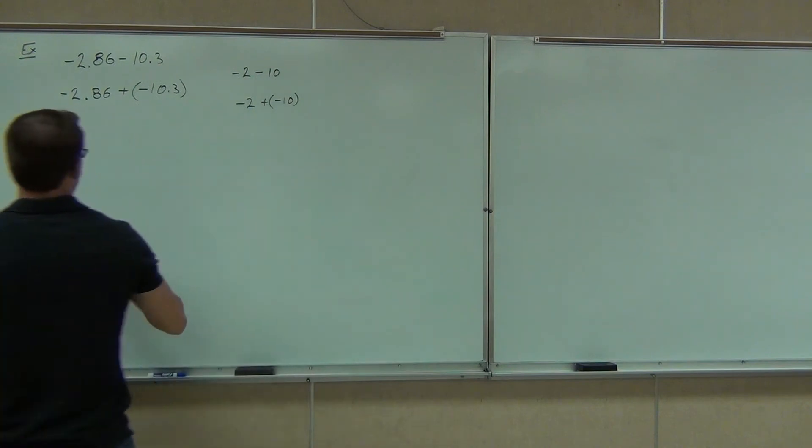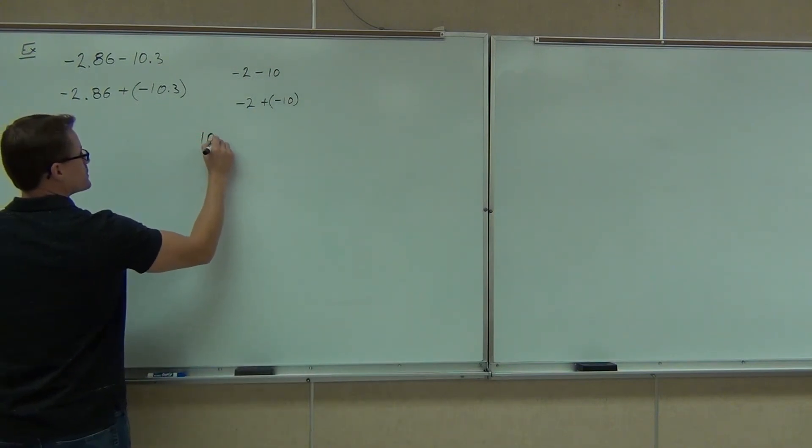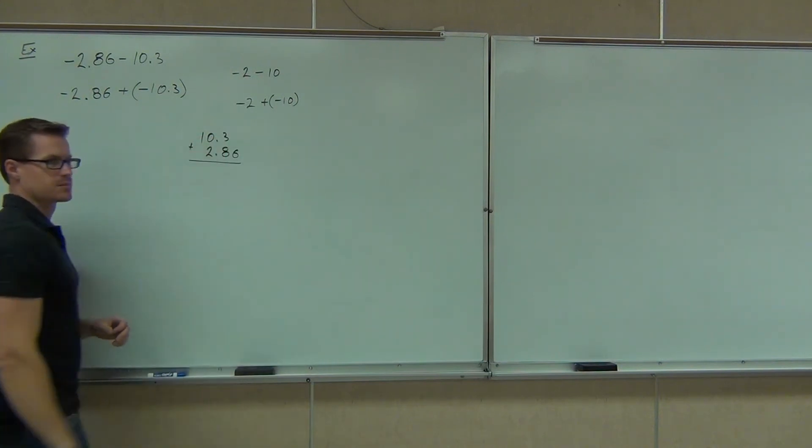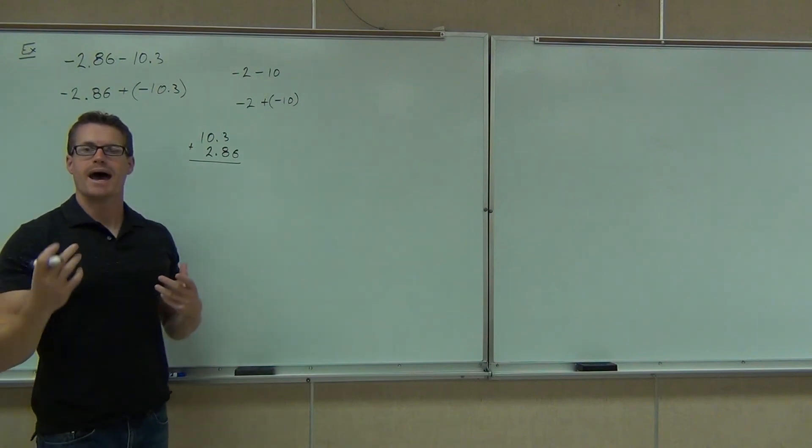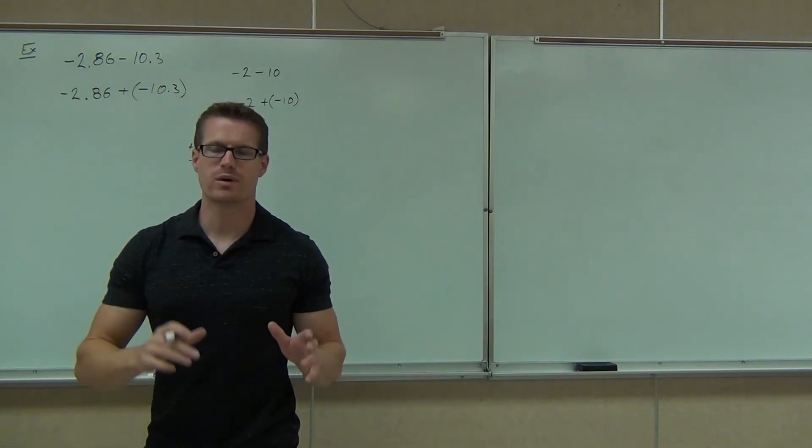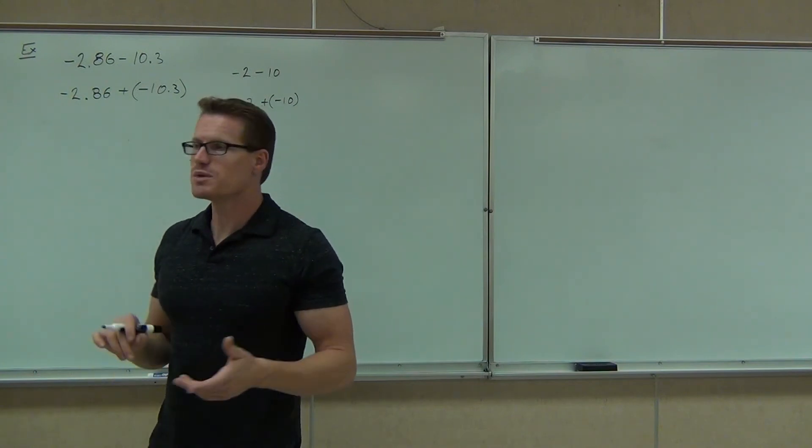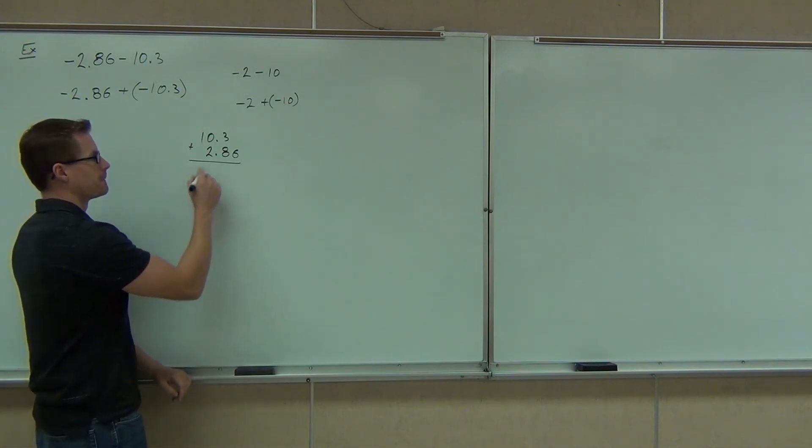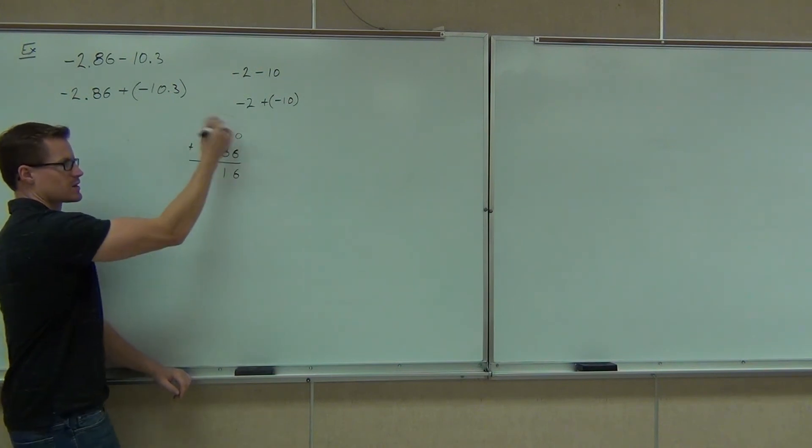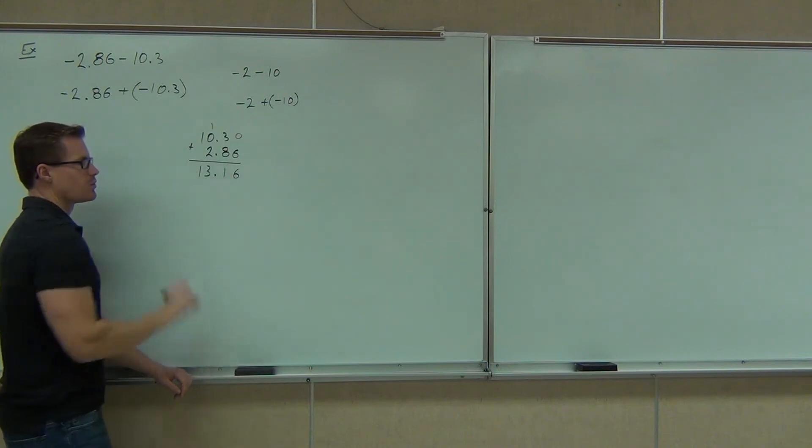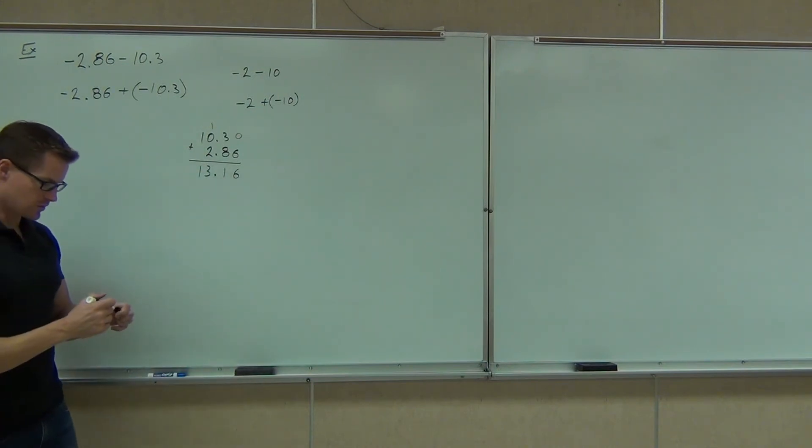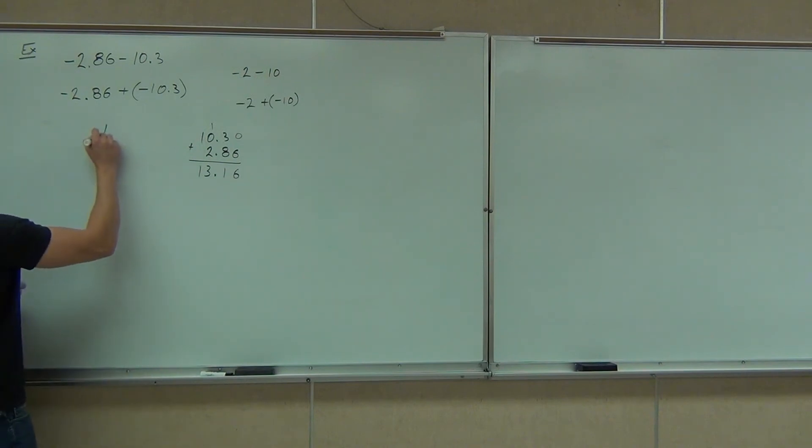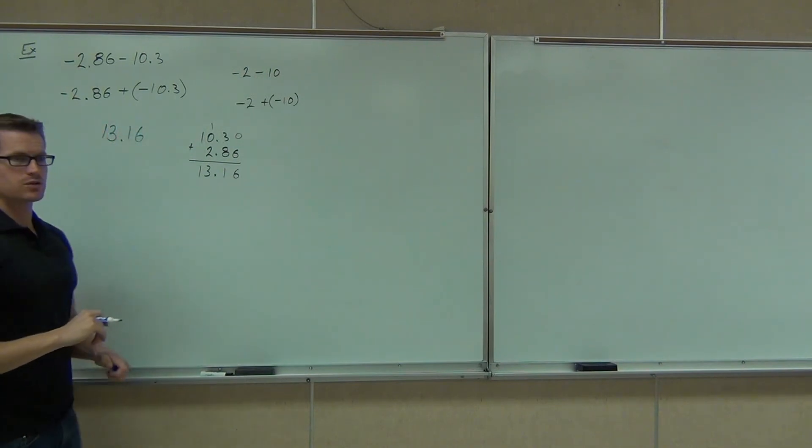So off to the side, add those numbers together. We'll do 10.3 plus 2.86. So as long as you know how to add and subtract some basic decimals, you know how to carry, you know how to borrow, and as long as you know the addition rules, you should be set for this section. Now, can I add these? Yes. How much are we going to get? 13.16. Good. This makes 6 hundredths, 11 tenths, which carries over. We get a 3. Remember to bring down our decimal point, we get 13.16. So our answer is 13.16. True or false? False.